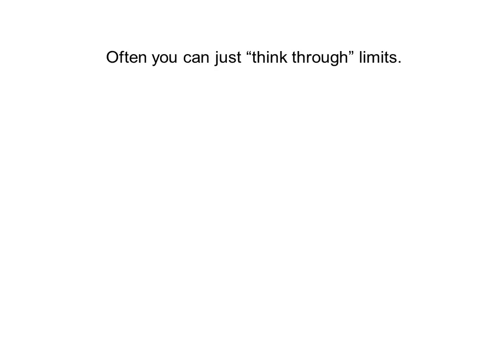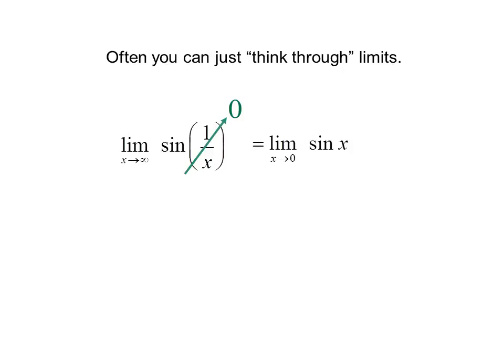Often you can just think through limits. The limit as x goes to infinity of sine of (1 over x): since 1 over x approaches 0, and we know the sine of 0 is 0, the limit equals 0.